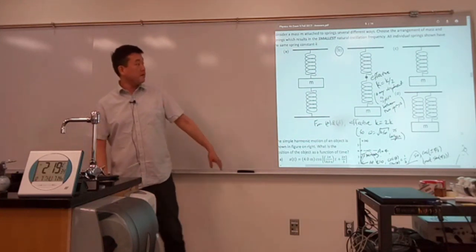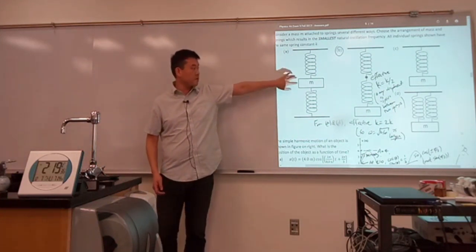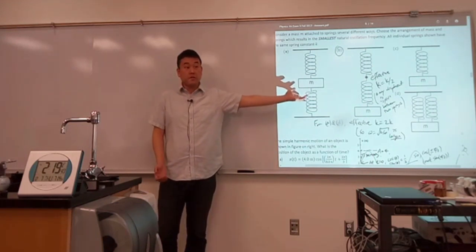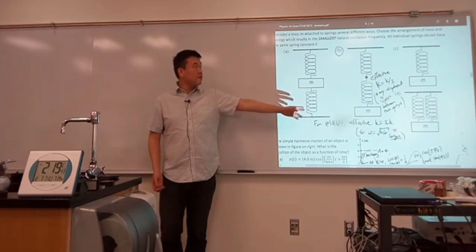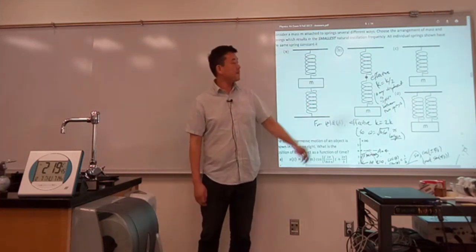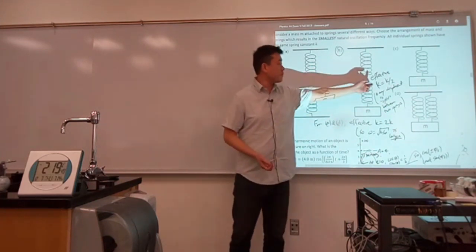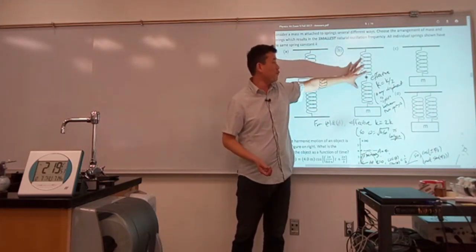And you got that the effective spring constant of arrangements both A and D is twice the spring constant of a single spring. So B is the challenging one. Somehow the effective spring constant works out to be half of one spring.